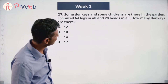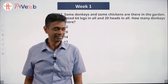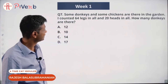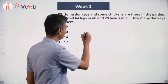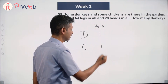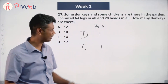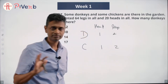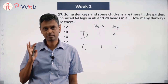Interesting question: some donkeys and some chickens are in the garden. I counted 64 legs in all and 20 heads in all. How many donkeys are there? Every donkey has one head, every chicken has one head — that's obvious. What's different is every donkey has four legs and every chicken has two legs. So the number of heads is simply the number of donkeys plus the number of chickens.